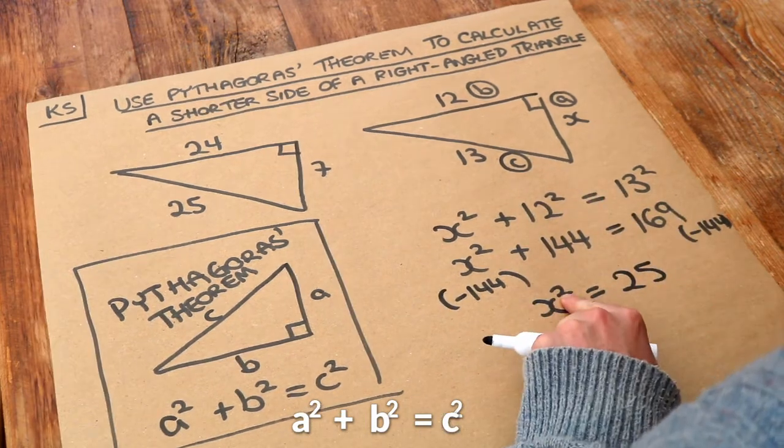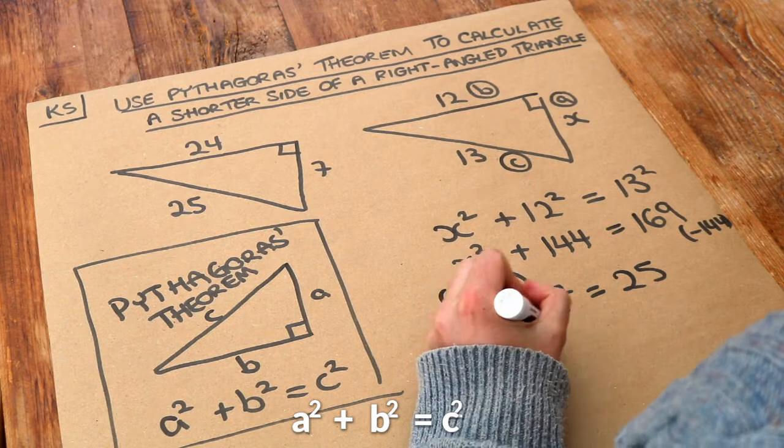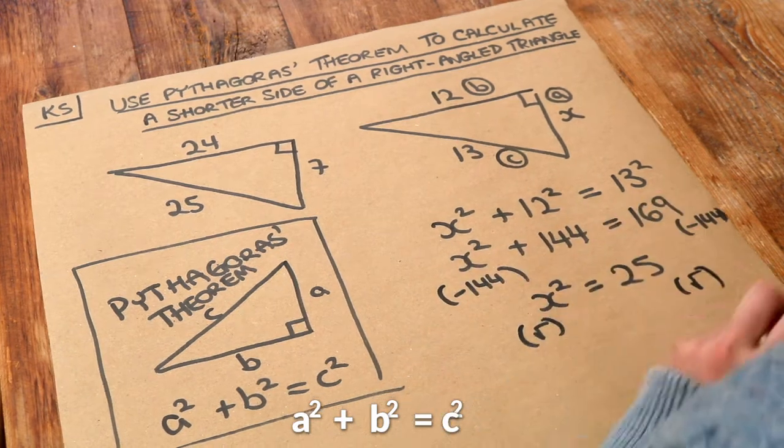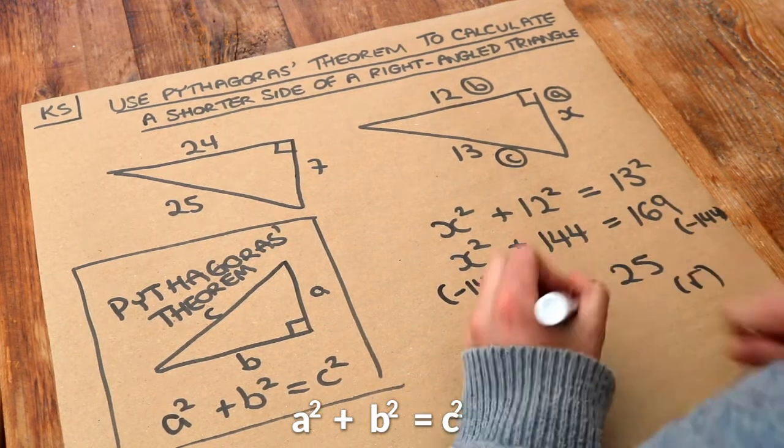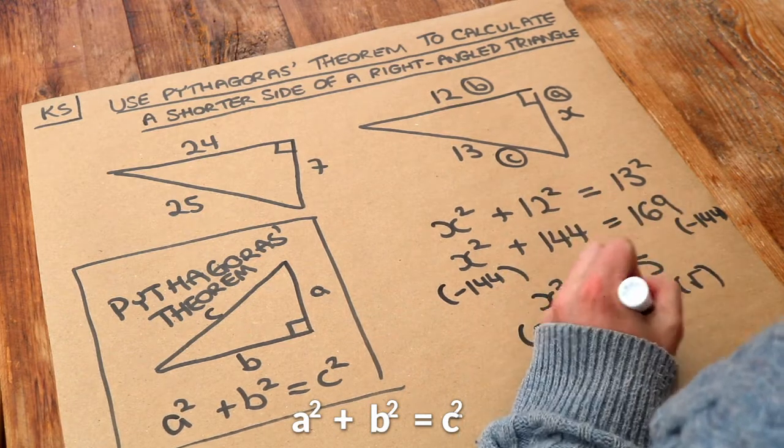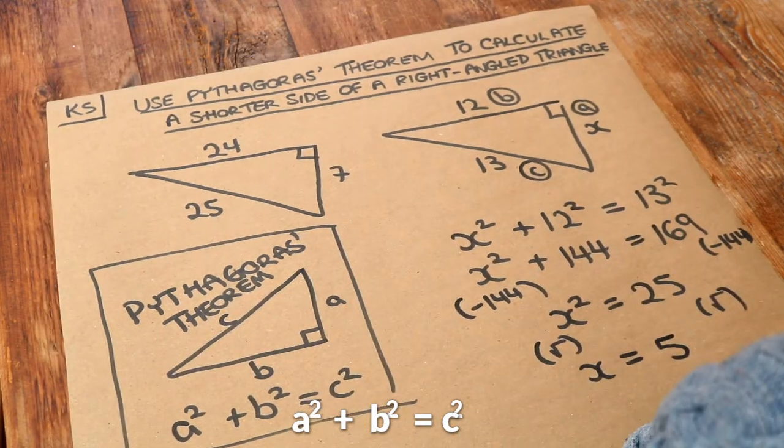Now X is being squared, we want to get rid of that squared, so we do the opposite, which is square root both sides. The square root gets rid of that squared, leaving just X, and the square root of 25 is 5. So the final answer is 5.